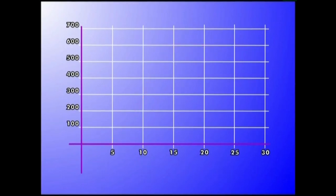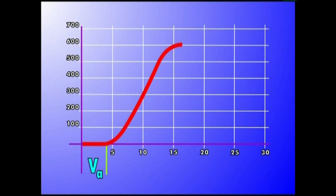A, abiatze abiadura: aize sorgailua energia elektrikoa ekoizten hasteko behar den abiadura txikiena. A, abiatze abiadura izendatua: potentzia maksimoa lortzeko behar den abiadura. Abiatura horrekin biurketa errendimendua hundiena lortzen da.